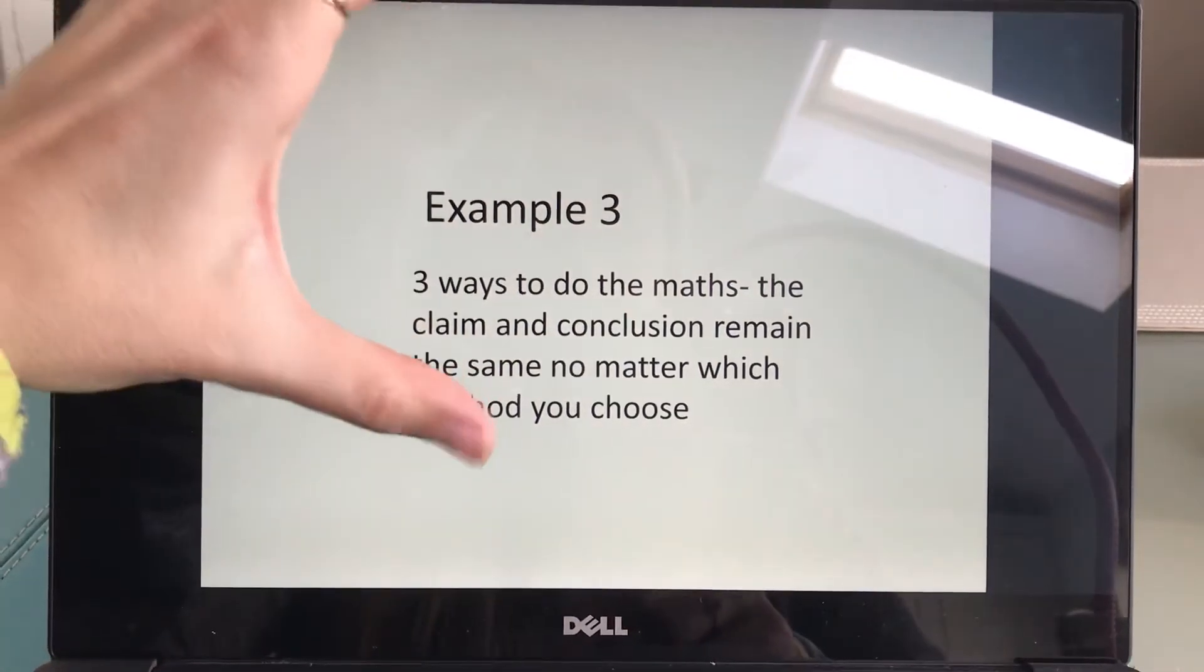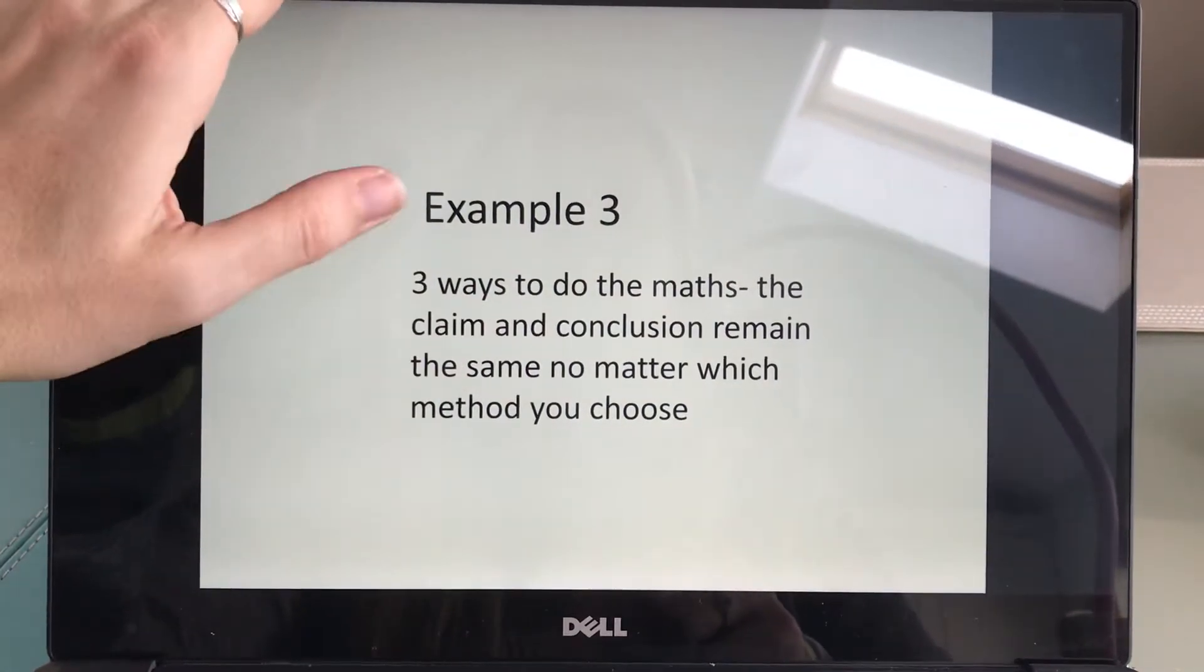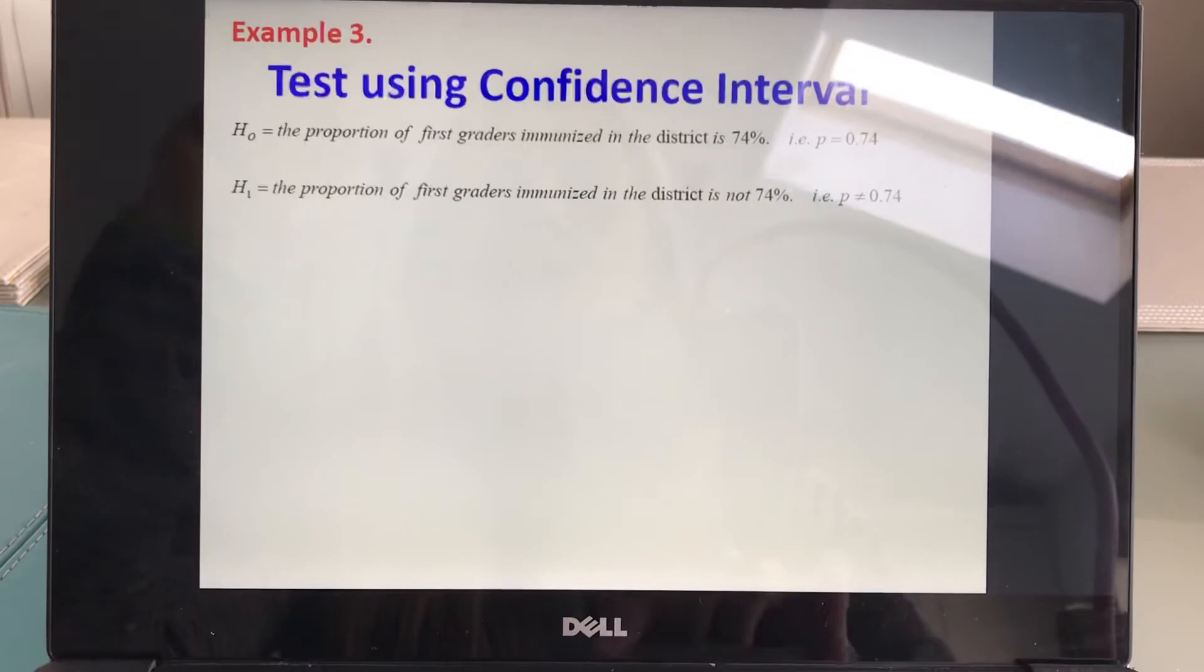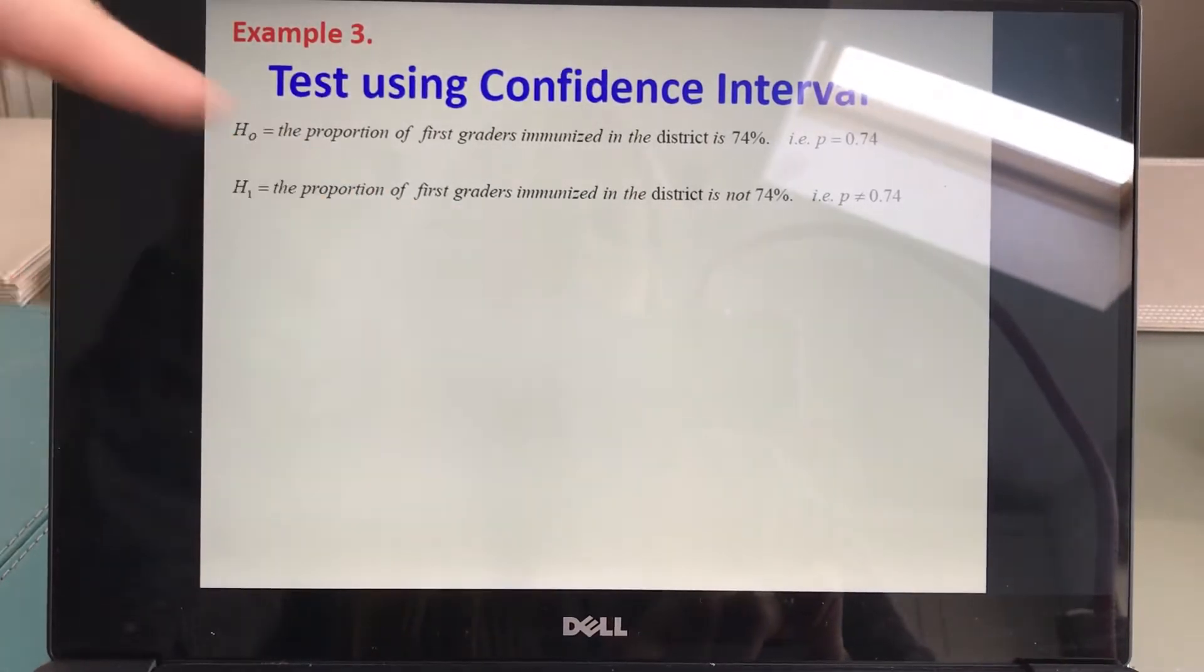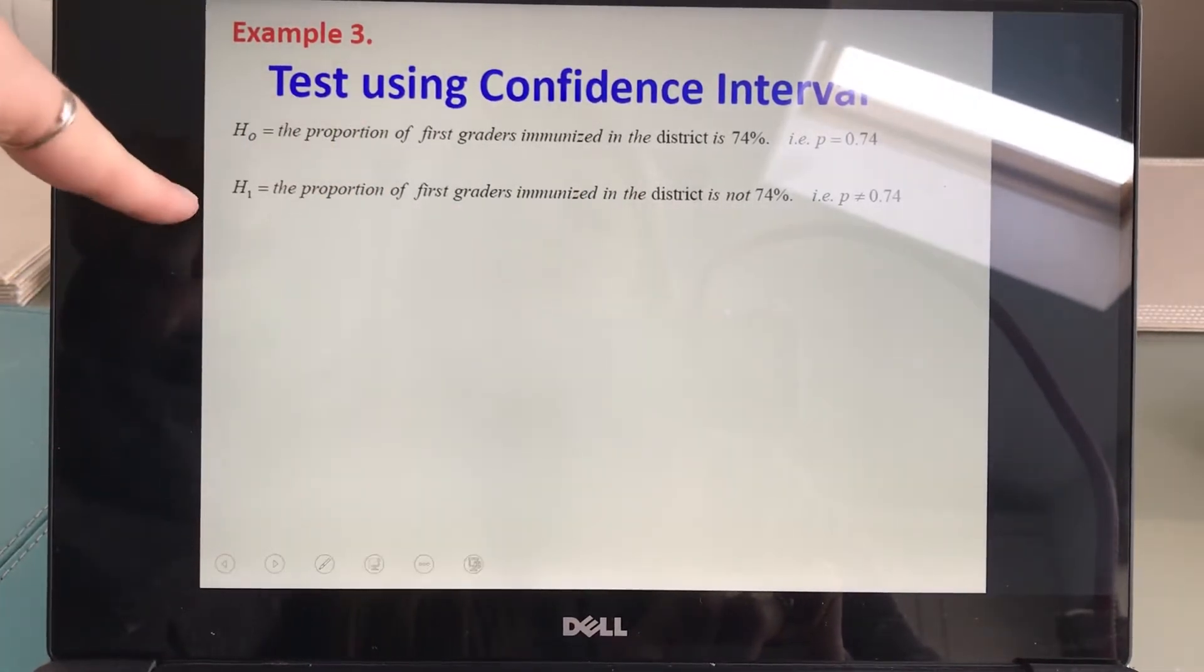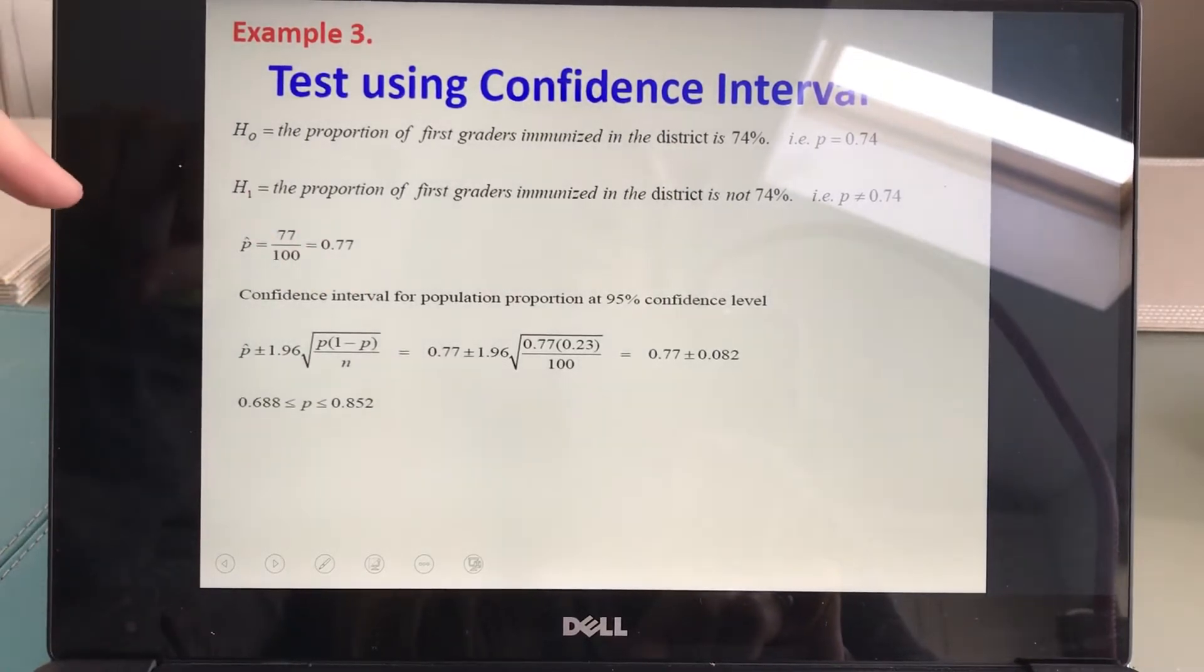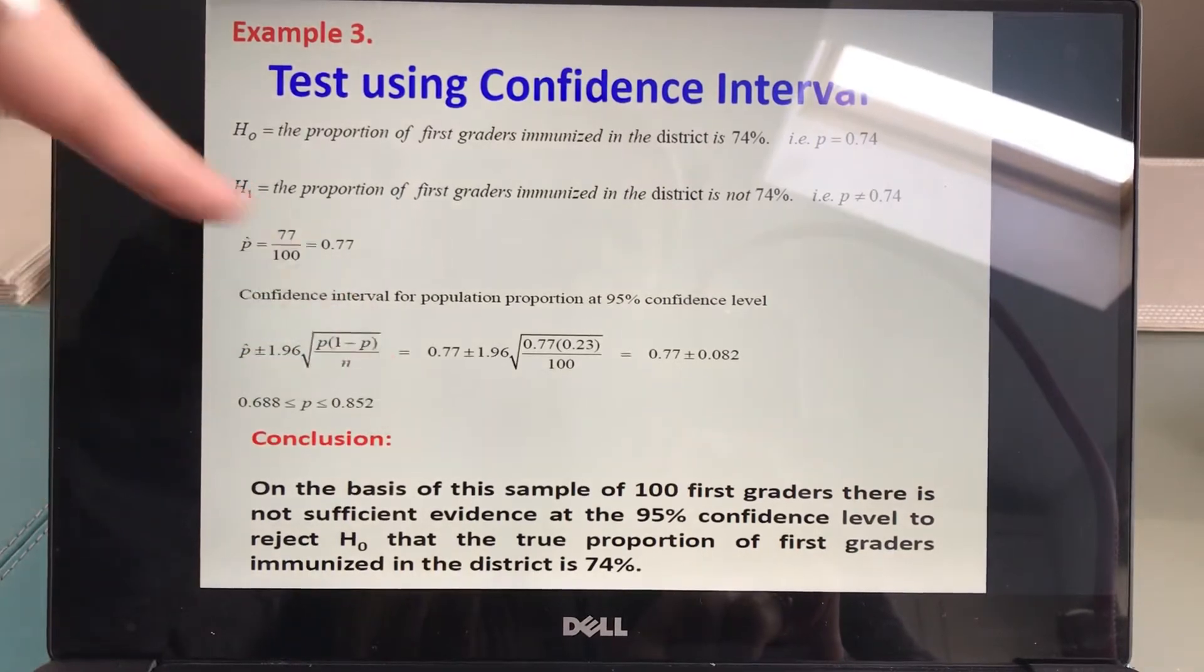The maths in the middle, I have done out three ways. So you have your null and alternative hypothesis. Here is the maths to do with a confidence interval and there's your conclusion.